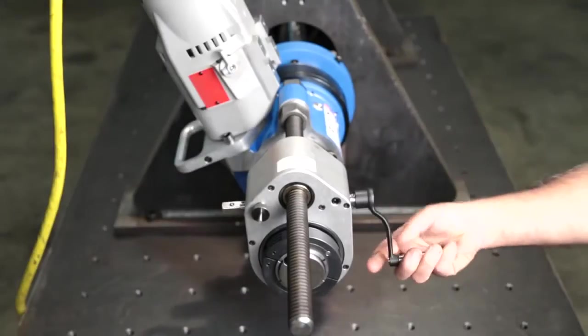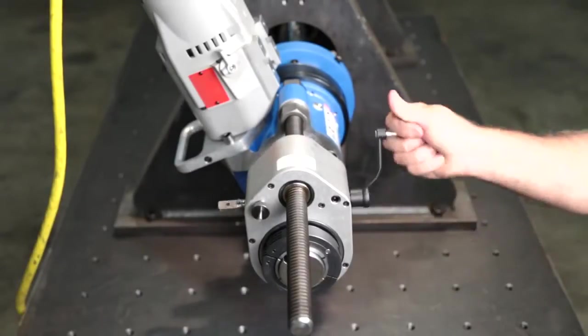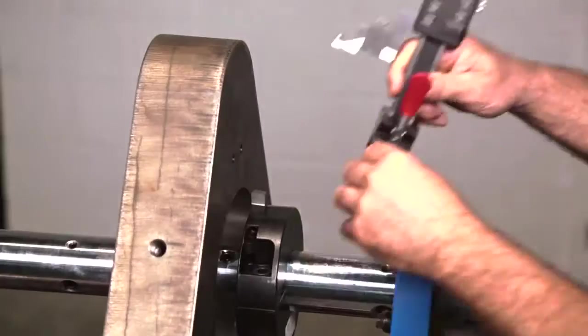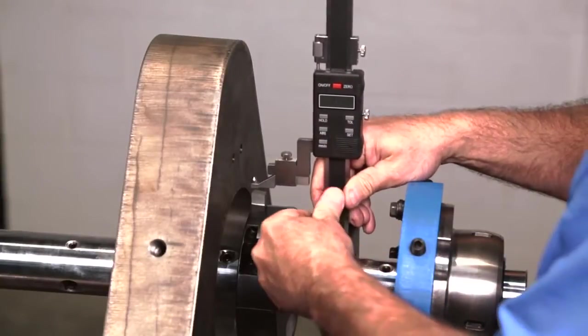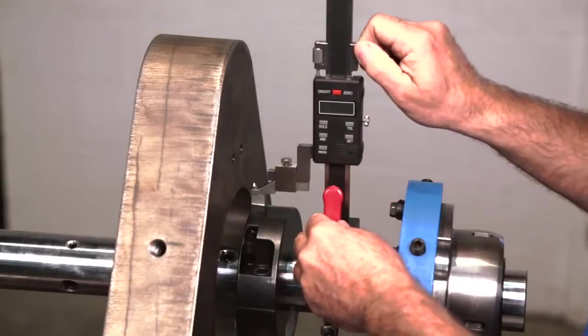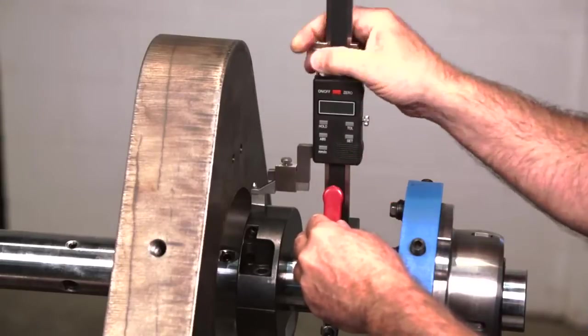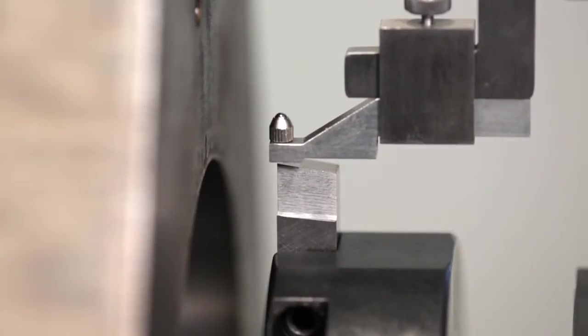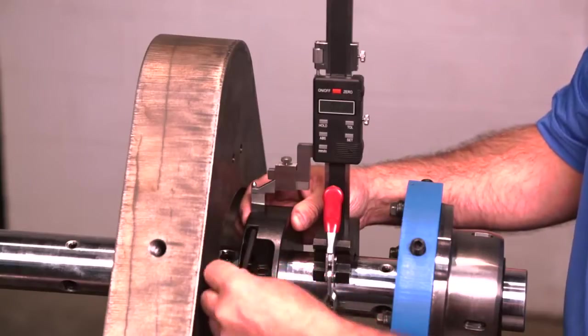Manually crank the axial feed unit to move your tool into position. Use a dial indicator or bore measuring tool to adjust the depth of cut. Lock in place with a set screw.